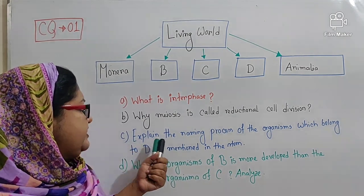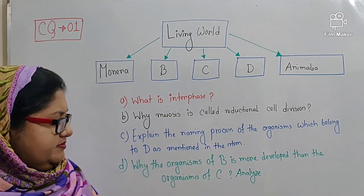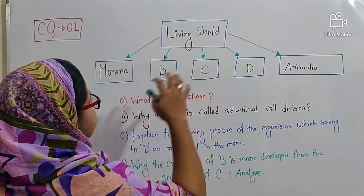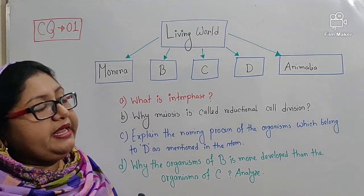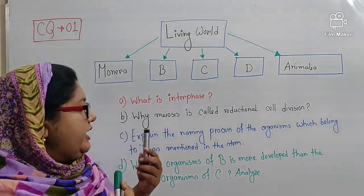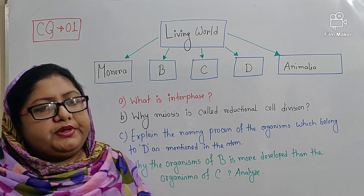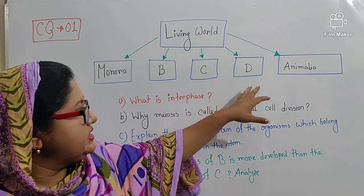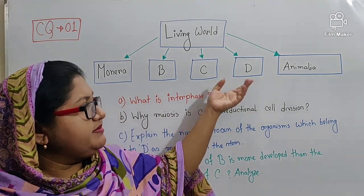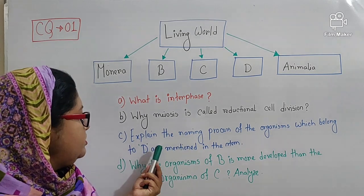Then, question number C: explain the naming process of the organisms which belong to D as mentioned in the stem. You can see which belong to D — what is indicated by D? D indicates Kingdom Plantae. So in the case of Kingdom Plantae, you will give all the examples relating to the answer using examples of plants. Hence, all the organisms belonging to D are plants. It is regarding Kingdom Plantae. Now, the naming process of the organism which belongs to D as mentioned in the stem — you can understand easily that this is from chapter one.